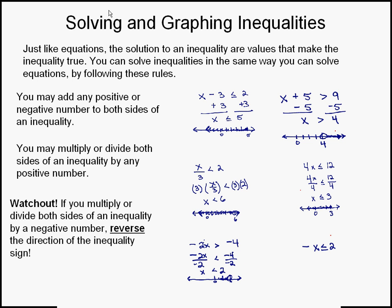If you doubt why that's true, try plugging in numbers to the right of 2 and see if that works. If I plugged in 3: negative 2 times 3 greater than negative 4 gives negative 6. Is negative 6 greater than negative 4? No — it's less than; it's further to the left on the number line. So any time you multiply or divide by a negative number, you automatically reverse the direction of the inequality in order to keep the statement true.